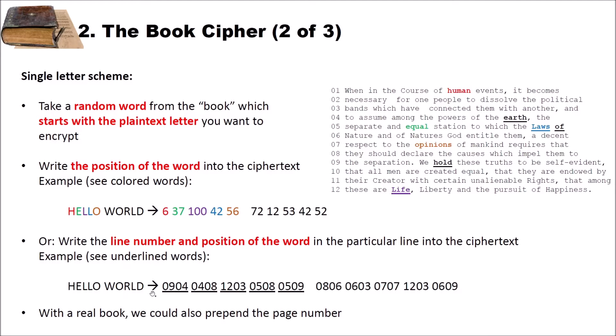Clearly, with a real book we could also prepend the page number. So we would have 01 for the first page, 09 for the 9th line, and 04 for the 4th word. And we would continue doing so with different pages, lines and words.